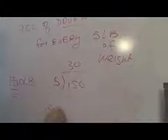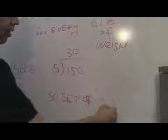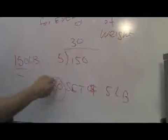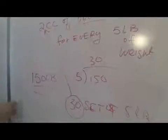There are 30 sets of five pounds. Okay? So now she takes that 30 and multiplies it by two, so it gives me 60 cc's.